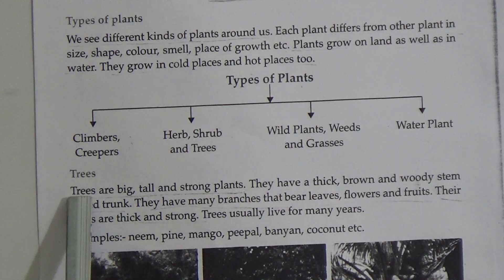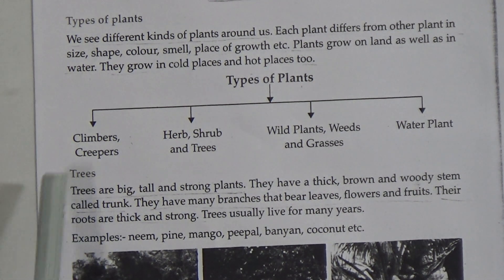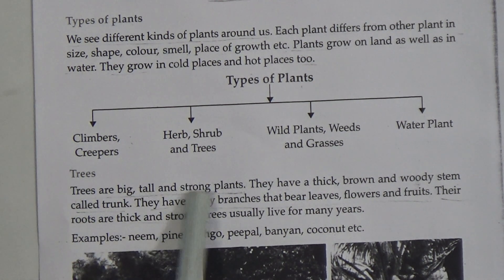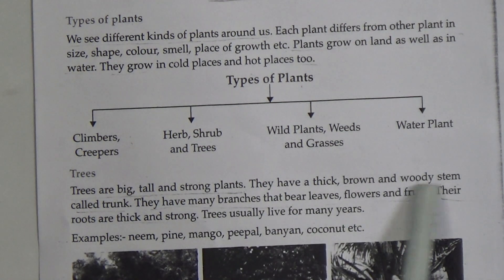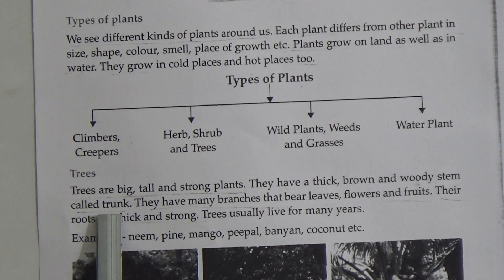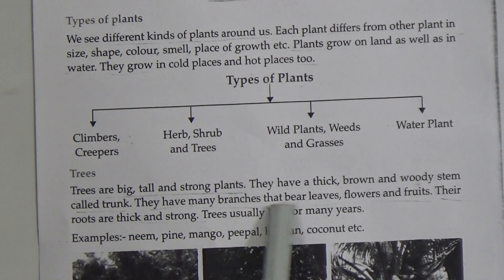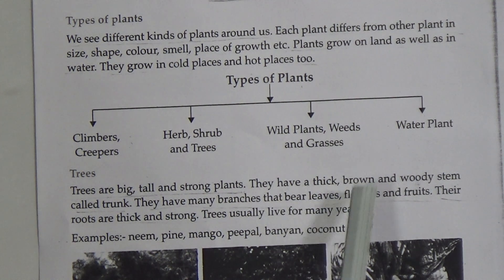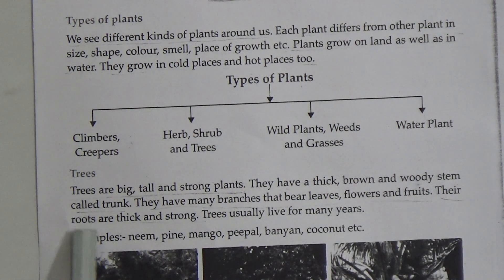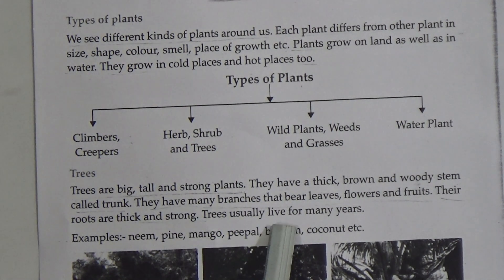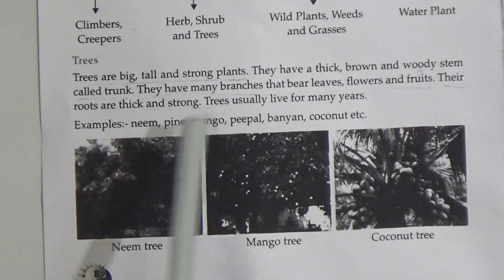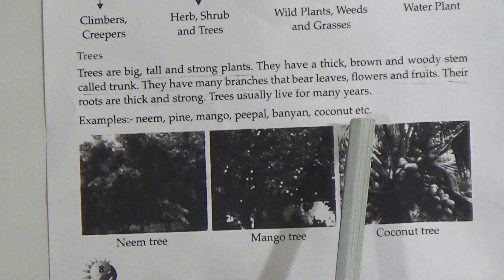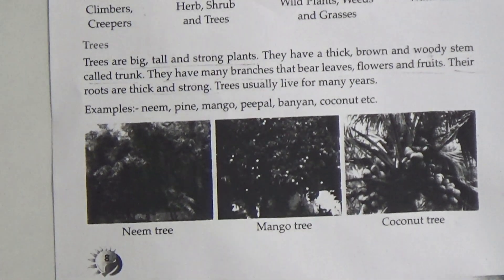Now we will learn about trees. Trees are big, tall, and strong plants. They have a thick, brown, and woody stem called a trunk. They have many branches that bear leaves, flowers, and fruits. Their roots are thick and strong. Trees usually live for many years. Examples: neem, pine, mango, peepal, banyan, coconut, etc. Here is the picture of neem tree, mango tree, and coconut tree.